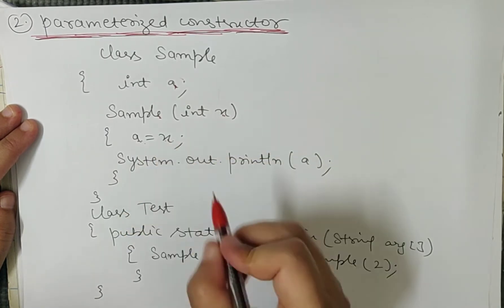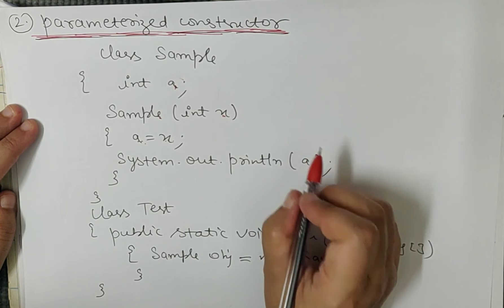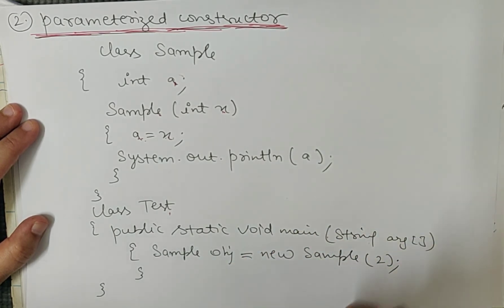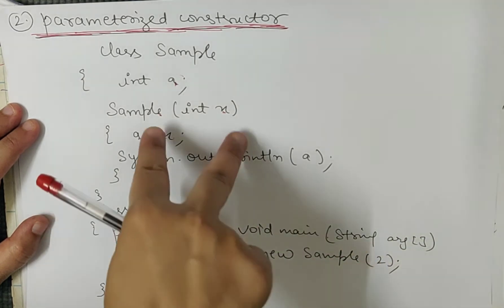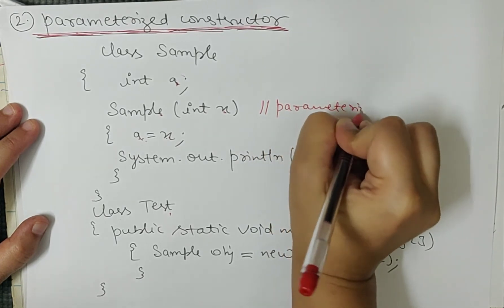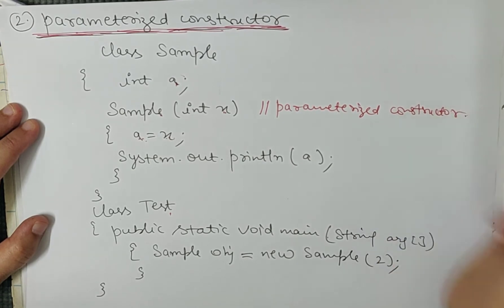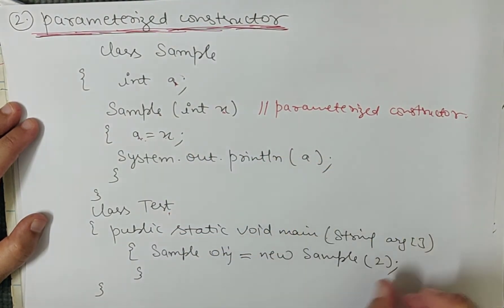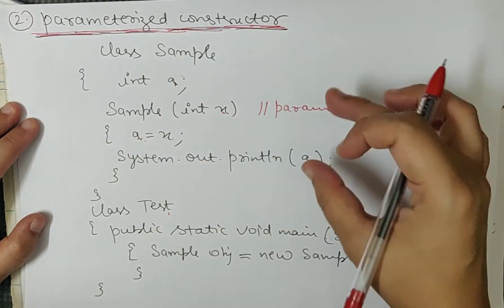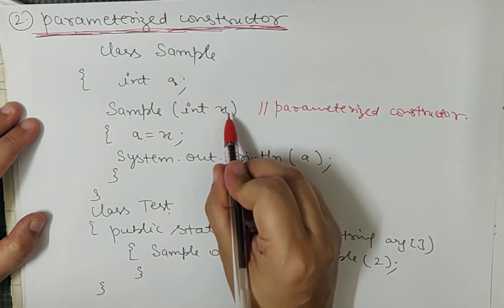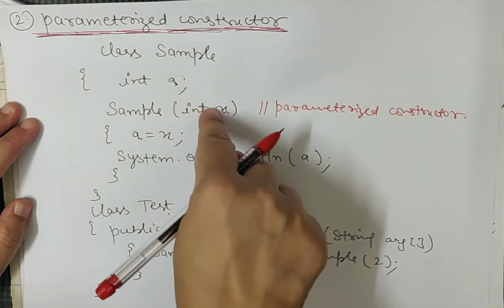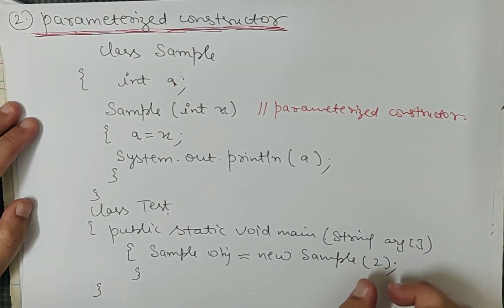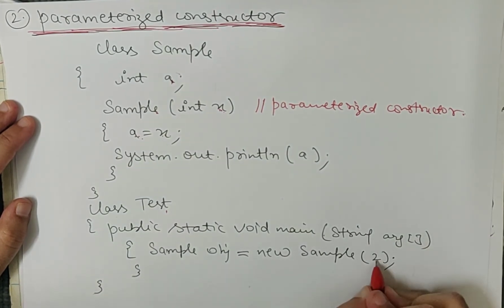This constructor will also print the value. In the test class, I have a 'public static void main'. The default constructor is automatically called at the time of object creation, but when you want to call the parameterized constructor, you have to call it deliberately by passing the parameter. If you do not pass a parameter, the default constructor will be called instead. To call the parameterized constructor, you must pass the parameter with type matching — one parameter in the definition means one parameter at the time of calling.